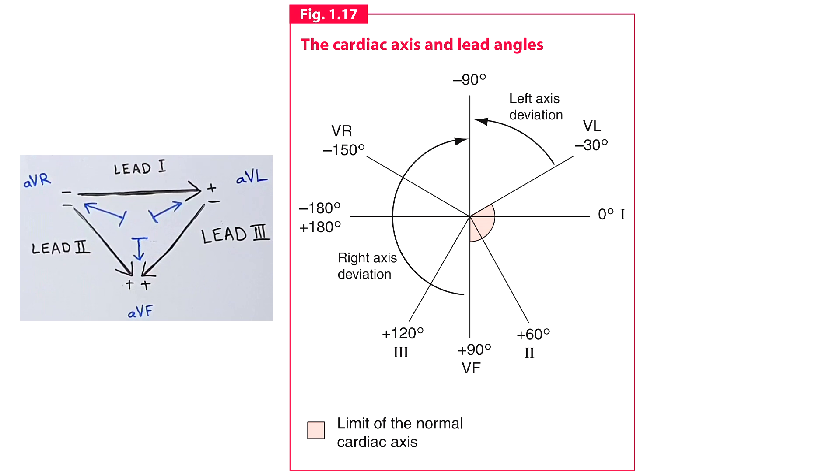The normal cardiac axis is in the range minus 30 degrees to plus 90 degrees. If the angle is greater than minus 30 degrees and closer to the vertical, left axis deviation is present. If the angle is greater than plus 90 degrees, right axis deviation is present.